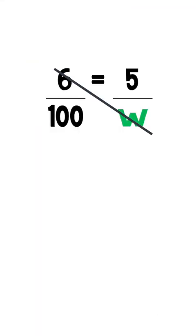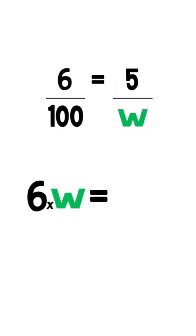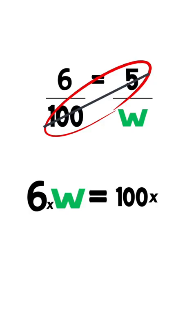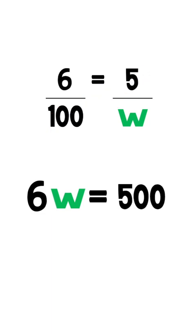So crisscross multiplication means you multiply the opposite numbers across the equal sign. So in this case, you'd multiply six times the W, which would be six times W. And on the other side of the equals, you'd put 100 times five. Well, I know what that is. Five times 100 is 500. Good, Ziggy. That's right.